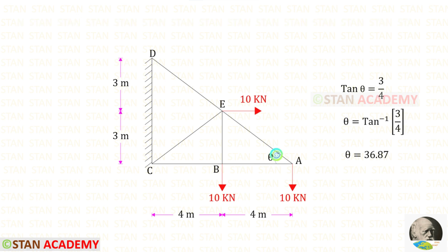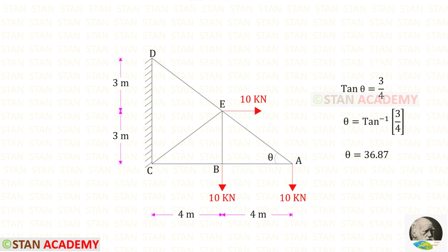We have to find this angle. Let us keep this angle as theta. Let us take this triangle and use the tan theta formula. We know that tan theta is opposite side by adjacent side, so 3 upon 4. In this way, for theta we will get 36.87 degrees.